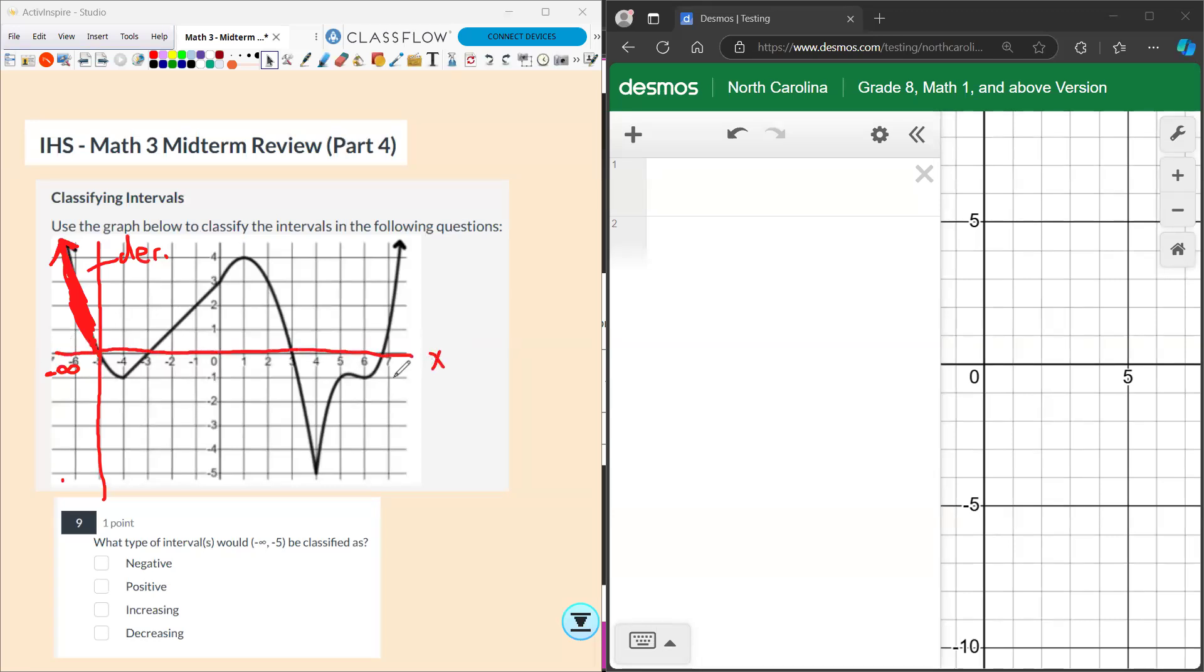So this has the benefit of having two different types of intervals. It's decreasing, but because it's above the x-axis, we would consider it positive. So it has two classifications: decreasing and positive.